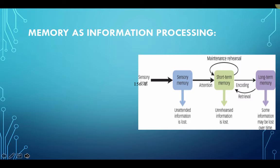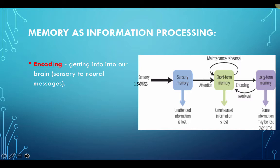If we look at memory as information processing, there are three important processes to discuss. The first is encoding — getting information into our memory system — which typically involves moving information from our short-term memory, which handles initial evaluation and processing, into our long-term memory for relatively permanent storage. This can be effortful or automatic.